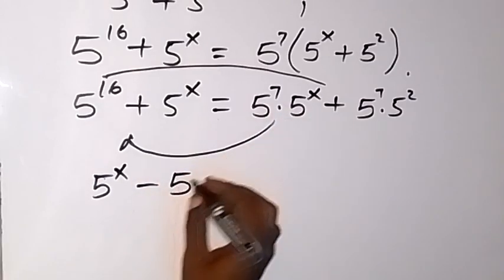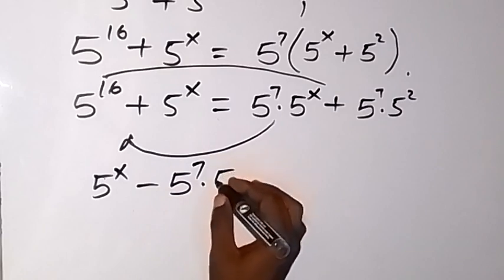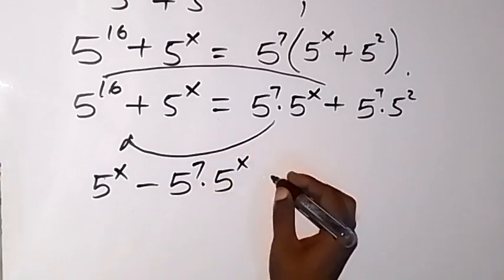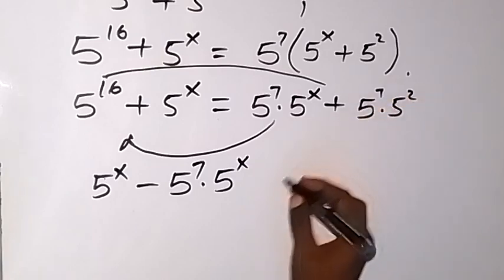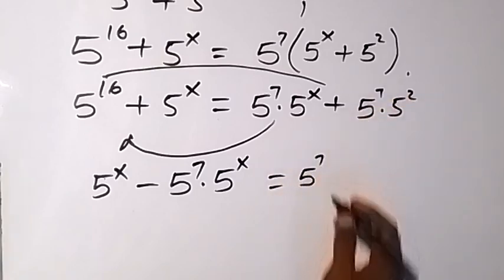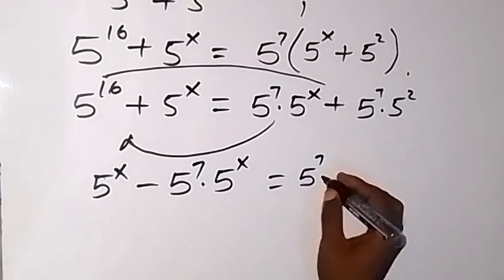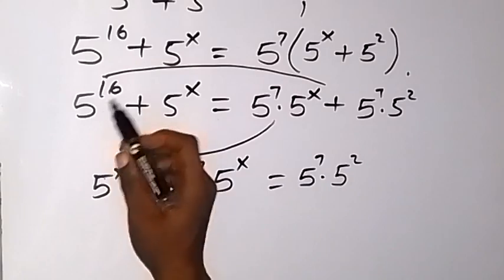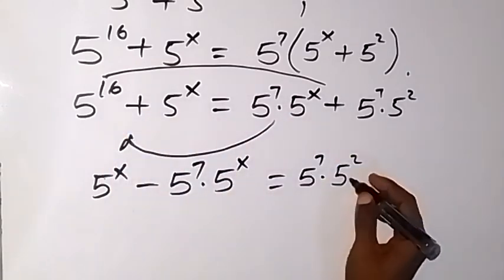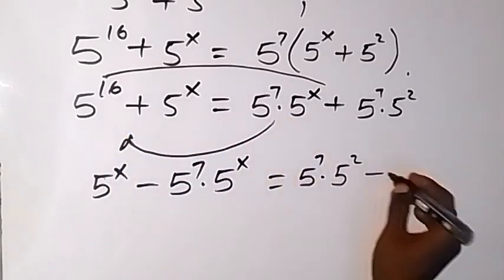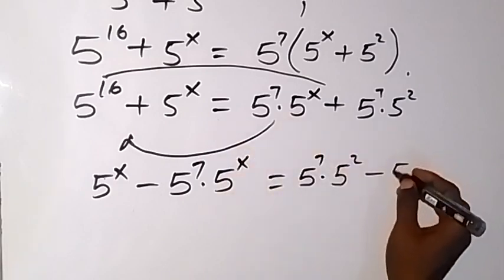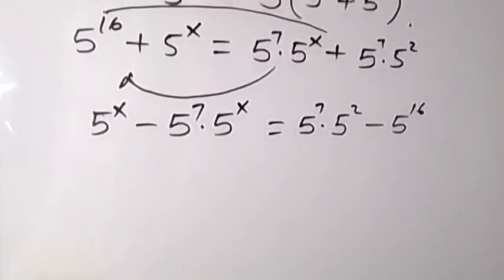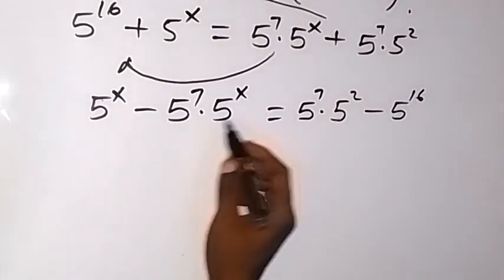We now have 5 raised to power x minus 5 raised to power 7 times 5 raised to power x on the left, equals 5 raised to power 7 times 5 raised to power 2 minus 5 raised to power 16 on the right.